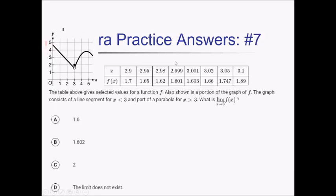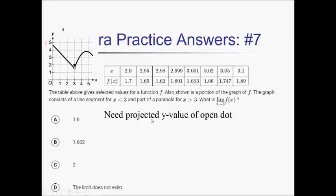For this problem, we're given a table with selected values of the f function and a graph of f, which is a line, a parabola, and a random dot. We want the limit as x approaches 3 of f of x. As x approaches 3 from both left and right, we're heading toward an open dot, so there is some y value that is our limit — choice D, the limit does not exist, is eliminated. We're also looking for the open dot's projected y value, not the solid dot. The solid dot has a value of 2, but that's f of 3, not the limit, so we eliminate choice C.